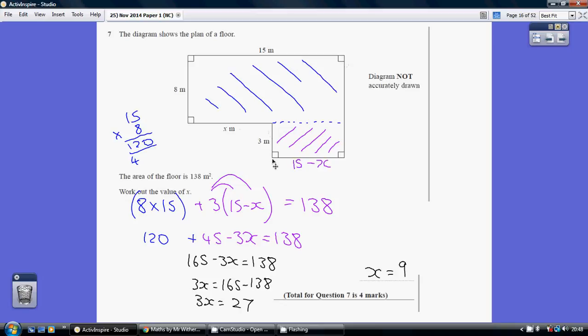So this length here is 15 take away x. Working out the area of this rectangle, base times height, so 3 times all of 15 minus x. Using the claw, 3 times 15, 3 times minus x, which is 45 minus 3x.